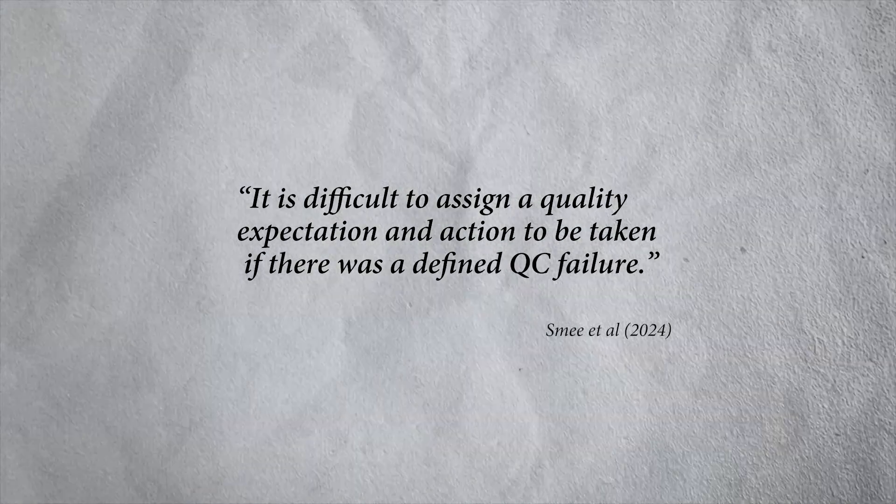Now the other argument fundamentally comes down to people thinking there is limited value in core duplicates. I've got time for that argument, but if you read the quote by Smee et al., it says that it is difficult to assign a quality expectation and action to be taken if there was a defined QC failure. Meaning: you're doing QC because you want to spot mistakes and failures, then fix whatever is wrong so your system continues in control. That is the principle of quality control. But it's very difficult to do that with two grades from two halves of core, because yes, they're going to be different - and how can you tell that one is too much different than the other? This is all true, and I agree with their excellently written paragraph on the use of duplicate core. But I do think there are some important cases where it does matter.